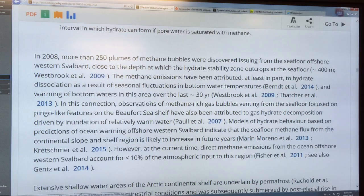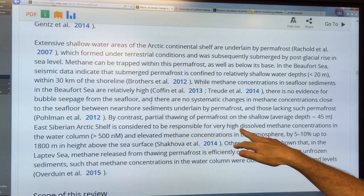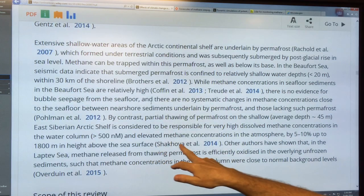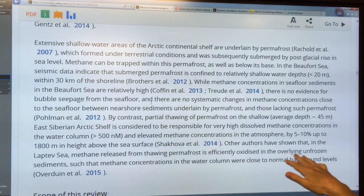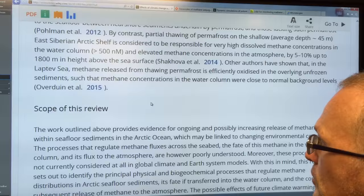In the shallow water, like on the Eastern Siberian Arctic shelf, we're getting the bubbling, we're getting the methane coming up. There's been elevated concentrations. There's been lots of high dissolved methane concentrations in the water column and elevated methane concentrations in the atmosphere, all the way up to about 1800 meters in height above the sea surface. In the Laptev Sea, the methane is oxidized by unfrozen sediment. So it's being broken down in the sediments of the sea floor. So there's not so much in the water column. So things vary across the Arctic, of course, that's no surprise.